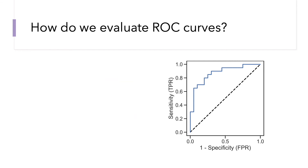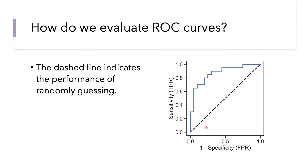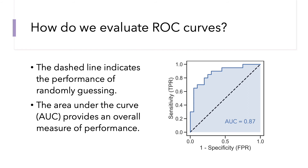To evaluate ROC curves, the dashed line represents performance you would expect from randomly guessing. Poorly performing biomarkers yield an ROC curve closer to this Y equals X line. More generally, we gauge performance by looking at the area under the ROC curve, which provides an overall measure of performance. Here the area under the curve is 0.87, but testing another protein biomarker for the same disease might give us an orange curve with an area under the curve of 0.98 — indicating that other biomarker would be better for our assay.